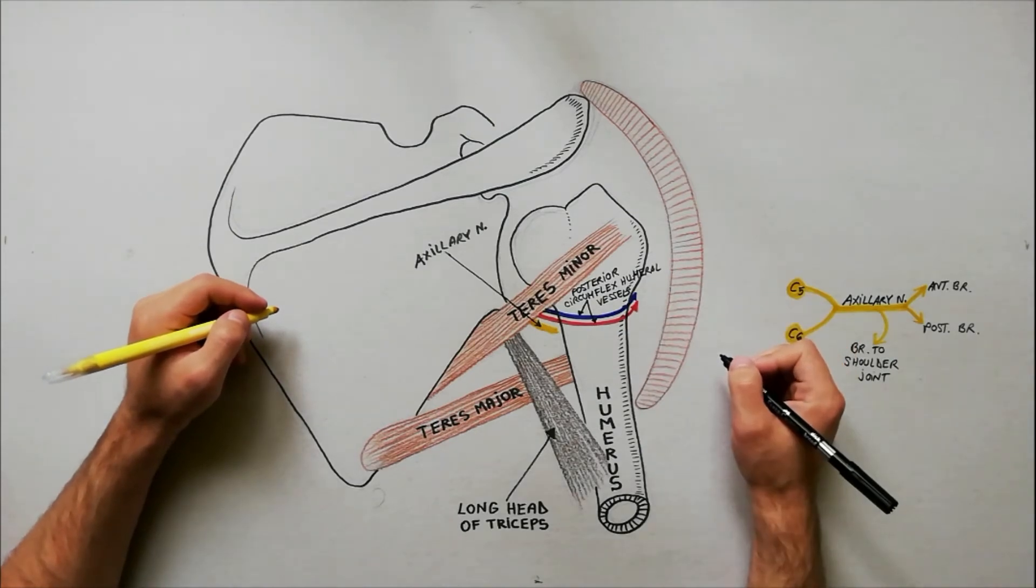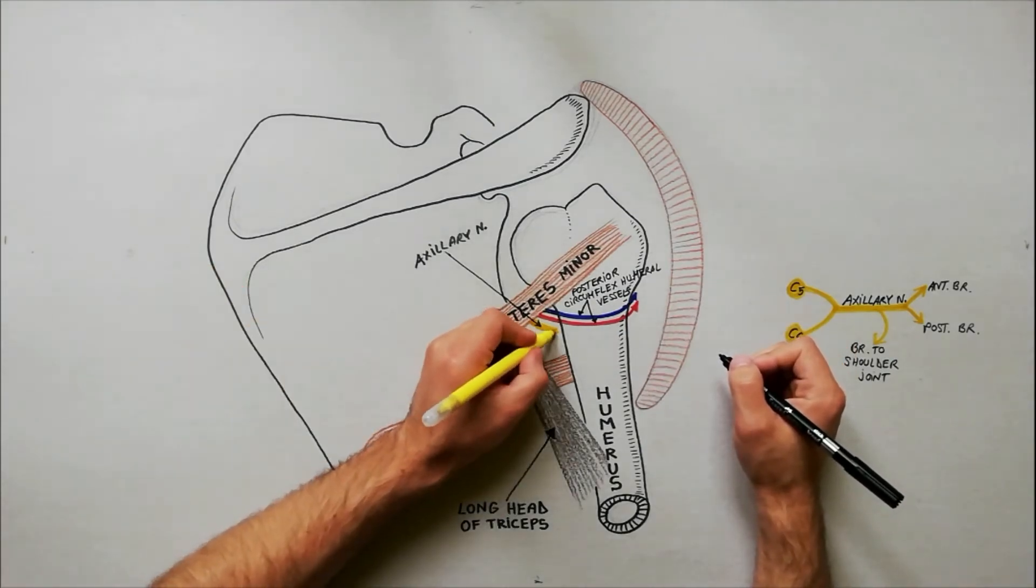After passing through the quadrangular space, the axillary nerve divides into its two branches.